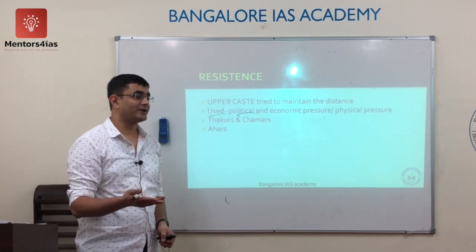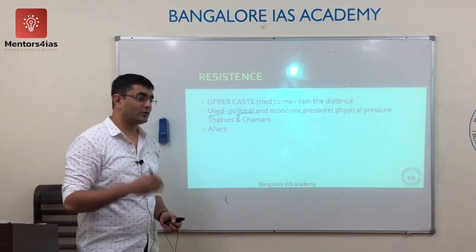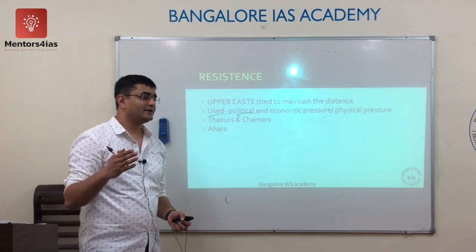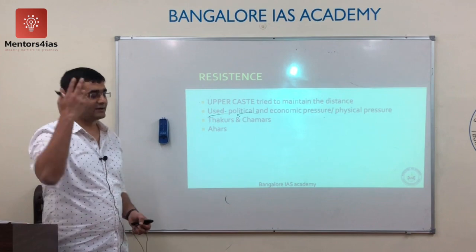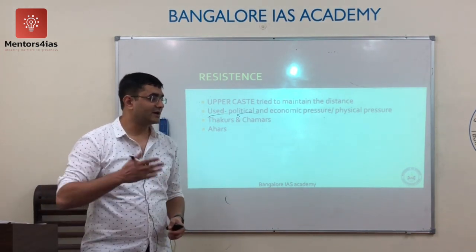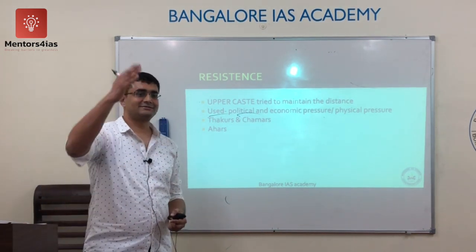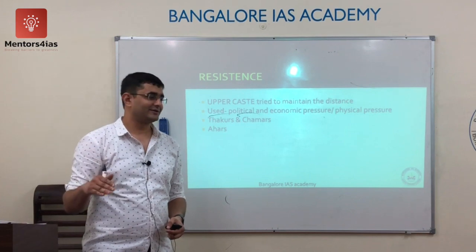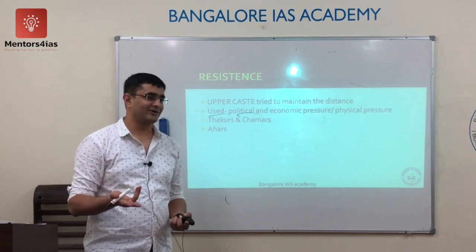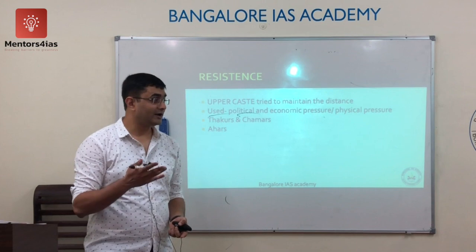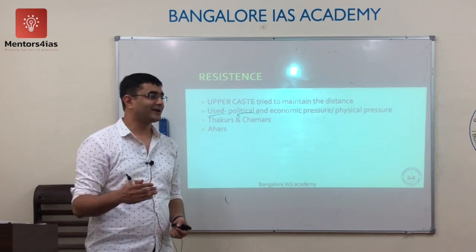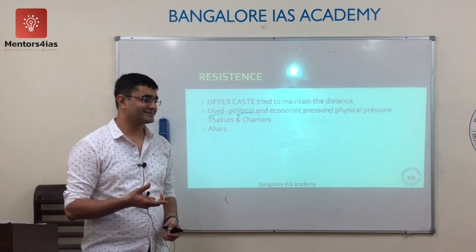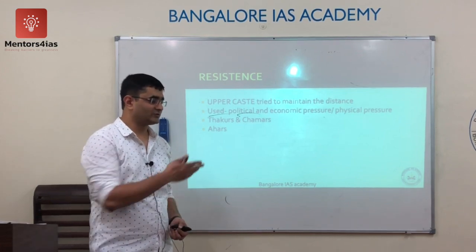In response, upper castes take up modernization, which is too complex for the lower caste to follow immediately, as a way to maintain their distance. So when the lower caste manages to Sanskritize, the upper caste shifts to modernization to stay ahead. Earlier, owning land meant you were upper caste; now they have turned the whole definition of class, and that is what will be discussed next under modernization.